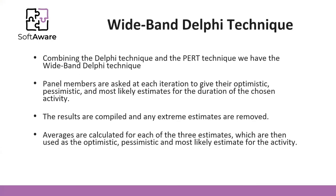Another technique is the Wideband Delphi technique, which combines the Delphi technique and the PERT technique. In each round, each participant uses the PERT technique to make their estimation. Three rounds are conducted, and at the end, the average of the third-round estimations is used as the final duration estimate.